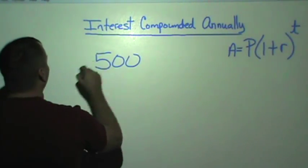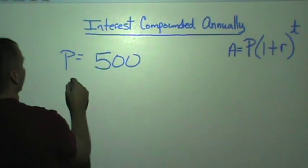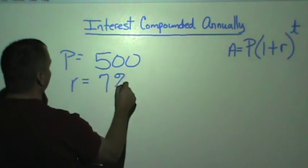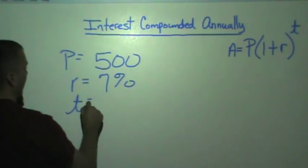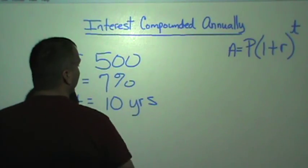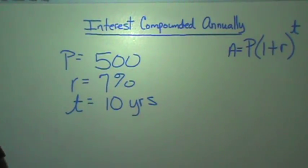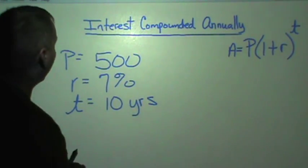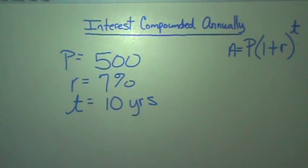Let's take $500 at seven percent for a time of 10 years. You can pause it now and see if you get this or let you work through it a little bit, and then I'll come back and work it out.